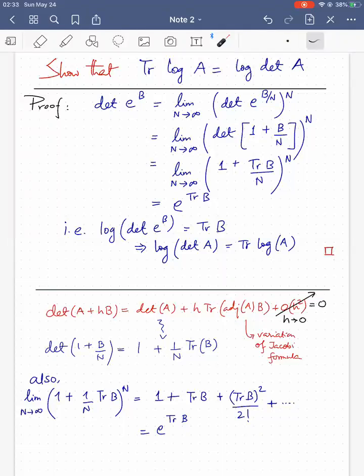Now, since N is tending to infinity, this argument of the exponential is very small, and we can write e to the power B by N as 1 plus B by N. So we have determinant of 1 plus B by N raised to the power N.